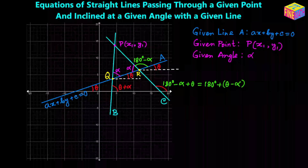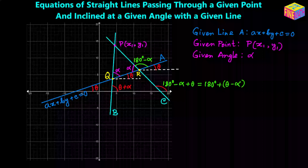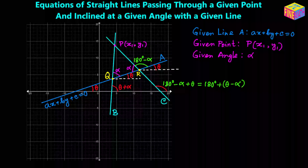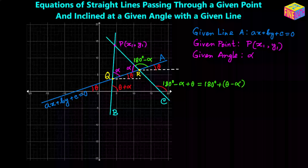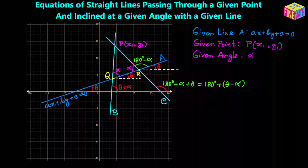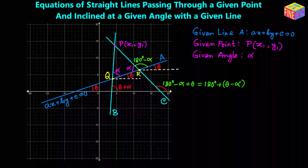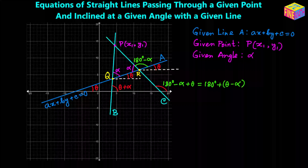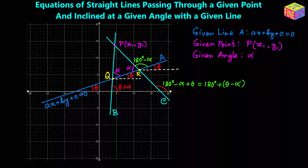The two straight lines I have drawn are named line b and line c, shown in light green. They both make an angle alpha with the given straight line a — as if they are the two equal sides of an isosceles triangle. In triangle PQR, angles PQR and PRQ are both alpha, so lines b and c are equally inclined with the given line a.